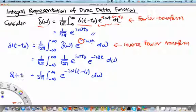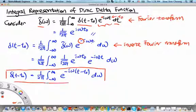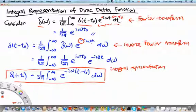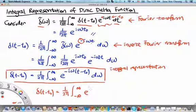This expression is the integral representation of the Dirac delta function: δ(t − t₀) = 1 over 2π times the integral from minus infinity to infinity of e^(iω(t − t₀)) dω. Whether you use the plus or minus convention, the final result is the same — you still end up with 1 over 2π times the integral from minus infinity to infinity of e^(iω(t − t₀)) dω.